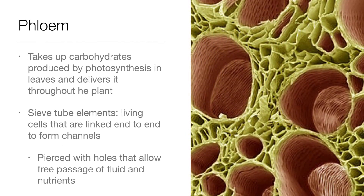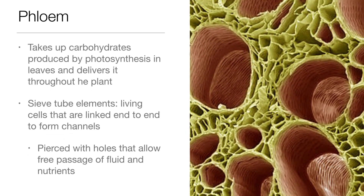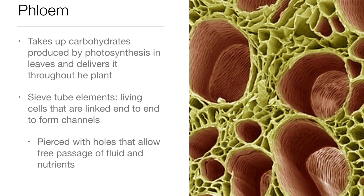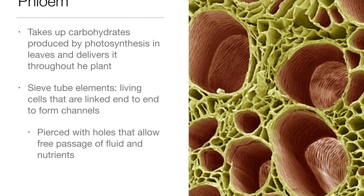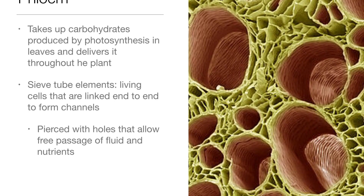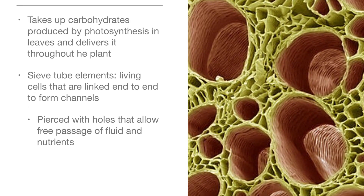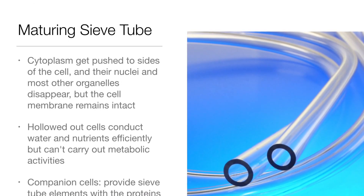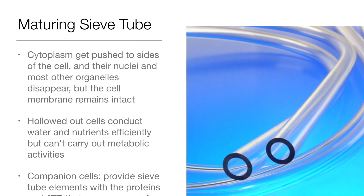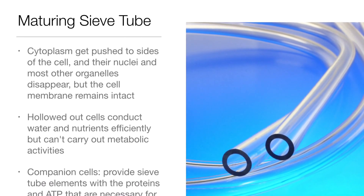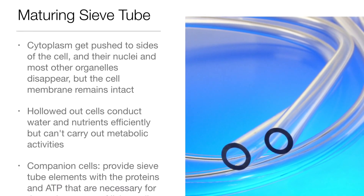Phloem takes up carbohydrates produced by photosynthesis in leaves and delivers them throughout the plant. Sieve tube elements are living cells linked end-to-end to form channels, pierced with holes that allow free passage of fluid and nutrients. As a sieve tube matures, cytoplasm gets pushed to the sides of the cell, and the nucleus and most other organelles disappear.